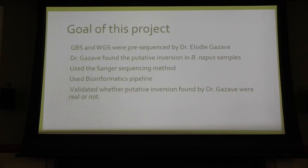The goal of this project was: first, GBS (genotyping by sequencing) and WGS (whole genome sequencing) were pre-sequenced by Dr. Elodie Gazzave, and she found the putative inversion in Brassica napus samples. We used Sanger sequencing and other bioinformatic pipelines to validate whether the putative inversion she found was real.